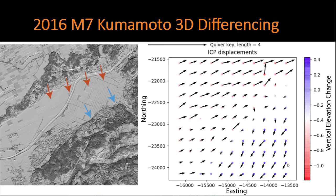High-resolution topography is a powerful tool for imaging and understanding processes active at the Earth's surface. When an area is imaged more than once, we can perform 3D differencing to detect 3D landscape changes. The 3D differencing tool measures lateral translation of the ground surface, therefore it is best applied to earthquakes, however it can also capture other processes such as sand dune migration and landslide movement.